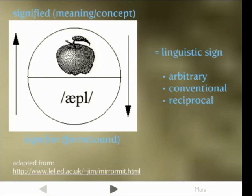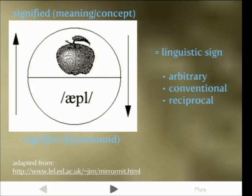Saussure also said that in our brain — because he sees this as a mental concept — the two parts work in a reciprocal fashion. What this means is: if you think of an apple, the mental concept, then the string of sounds 'apple' will also come to your mind. And if someone says 'apple', then you will also have the mental concept conjured up. The idea is that they're like two sides of a coin — heads and tails — you can't have one without the other. A leaf has got two sides and you can't strip off one. The two go together because that's how we learn them as a unit.